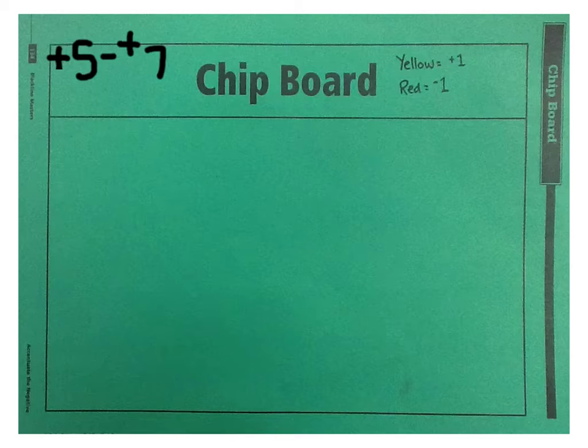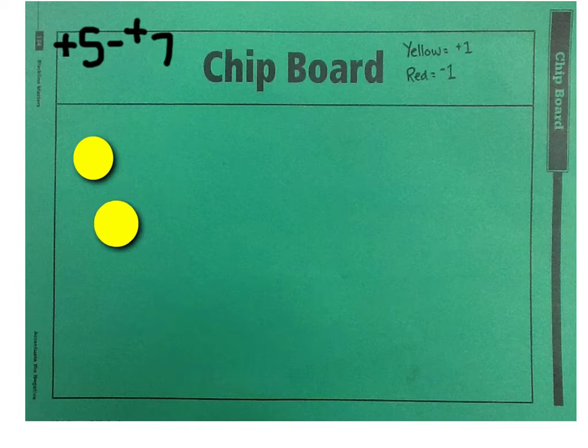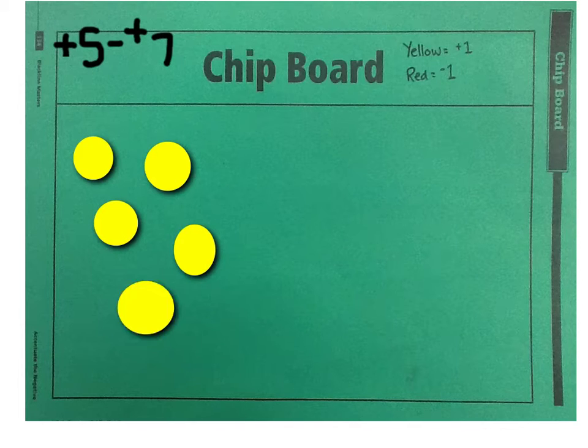Now I'm going to start out by first adding 5 positive chips. And we're using these yellow chips to represent that. So here are my 5 positive chips.